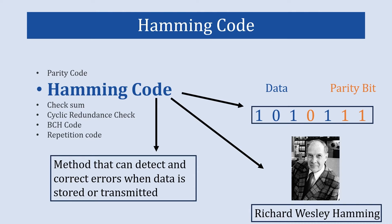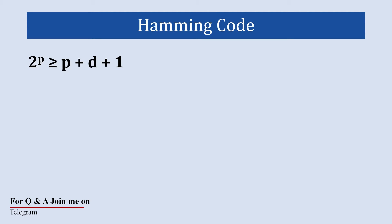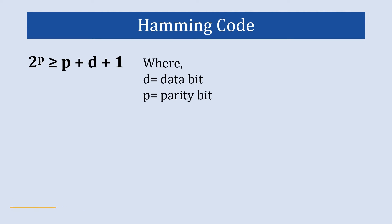The equation to find the total length of Hamming code is: 2 to the power p, greater than or equal to p plus d plus 1. Here d is the number of data bits and p is the number of parity bits. That additional 1 is used to indicate no error, which we will discuss later.